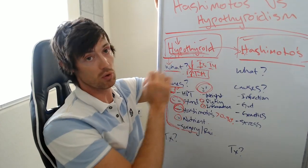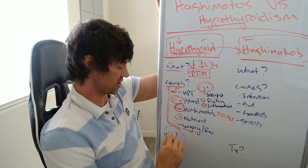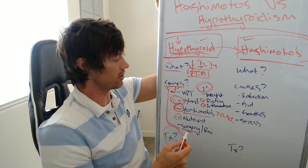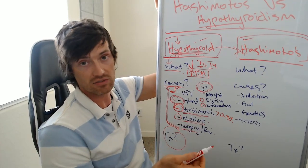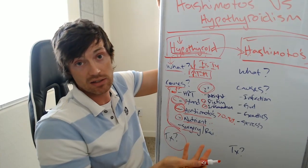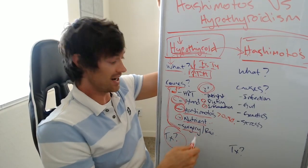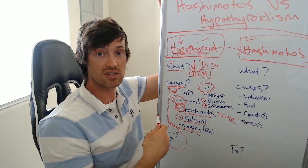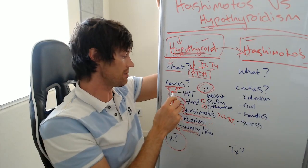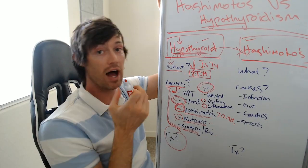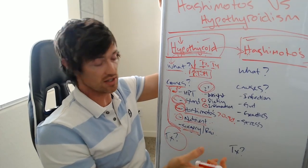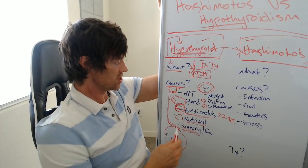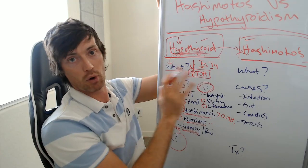The treatment changes for each of these causes, and that matters. The treatment for Hashimoto's is not the same as the treatment for iodine deficiency causing low thyroid — in that case, you'd take some iodine and it would improve. But iodine is going to do nothing if you've had your thyroid completely removed surgically. So if you think hypothyroidism is the same thing as Hashimoto's and you treat them both the same way, you're not going to end up in a good place. The treatment matters.